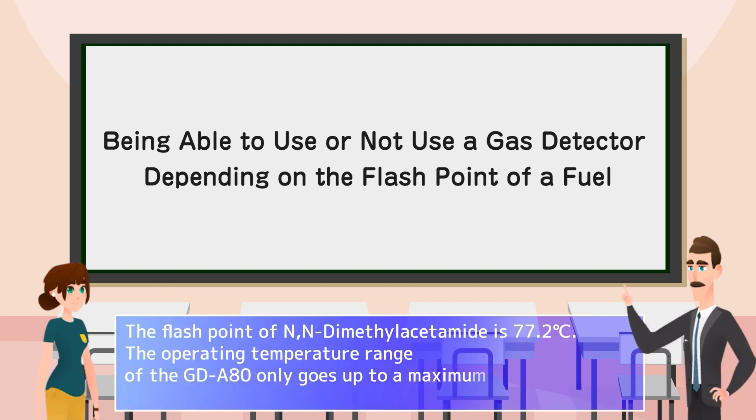The flash point of N,N-dimethylacetamide is 77.2 degrees Celsius. The operating temperature range of the GDA80 only goes up to a maximum of 53 degrees Celsius, so you won't be able to monitor it at 100% LEL.